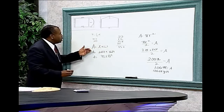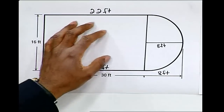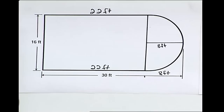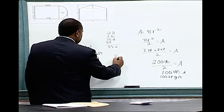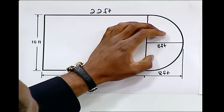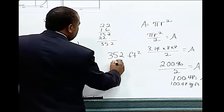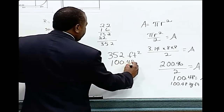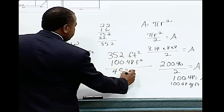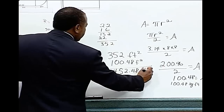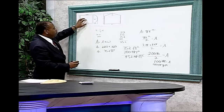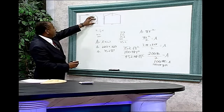Now, in order to find the area of this entire figure, we must add area one, which is the rectangle, plus area two, which is the half circle. Area one, the rectangle, was equal to three hundred fifty-two square feet. Area two, which consists of a half circle, is equal to one hundred point forty-eight square feet. Therefore, the area of this entire room is four hundred fifty-two point forty-eight feet squared.